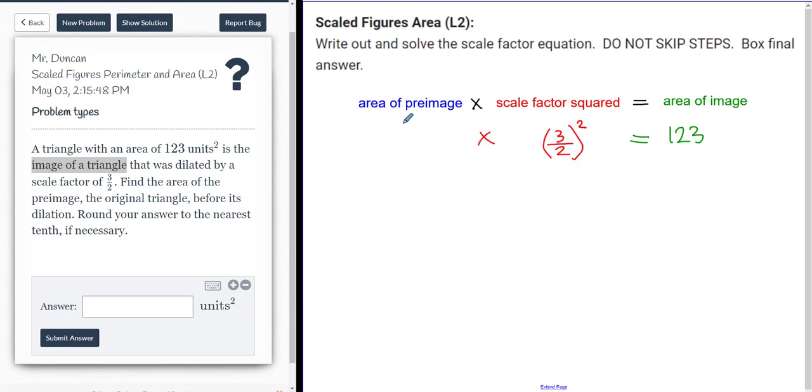And then when we're done, we're going to find out the area of the pre-image. And in this case, I don't know what the pre-image, so I could put A or P or whatever you want to do. I'm just going to put A for that. So in other words, it's area of the pre-image multiplied by 3 halves squared equals 123. And that's kind of the basic setup.